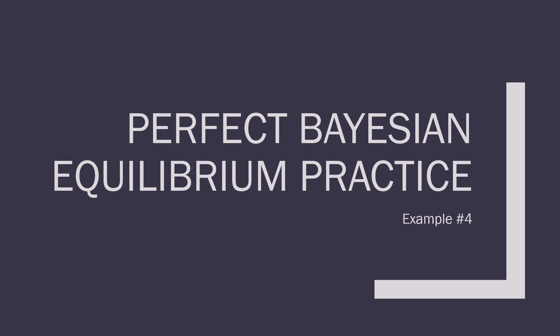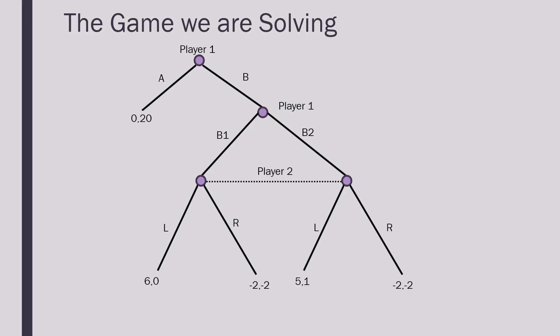Hello everybody! Welcome to this fourth example where we're going to solve for a Perfect Bayesian Equilibrium. This game is going to be a little bit different because we're going to have a proper subgame with it. The game that we're solving is as follows: player one faces a choice of ending the game immediately and getting a payoff of zero, or getting into a simultaneous move game with player two.